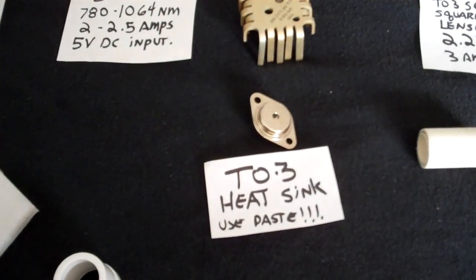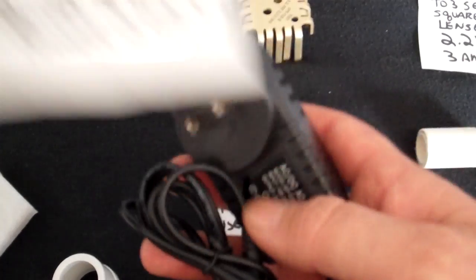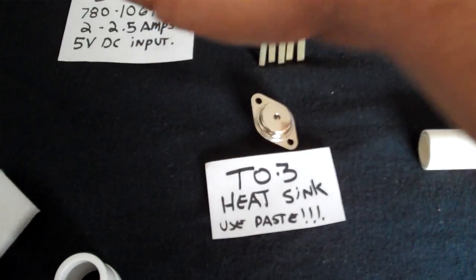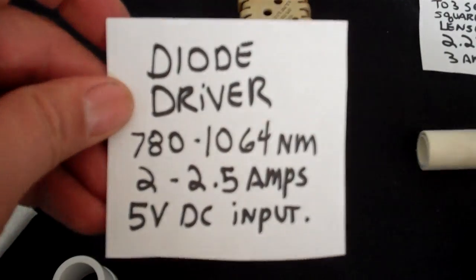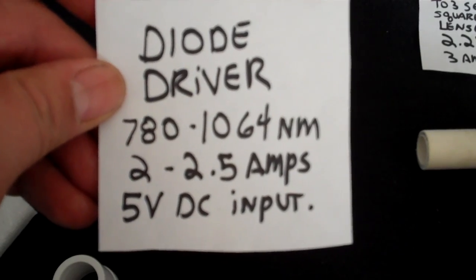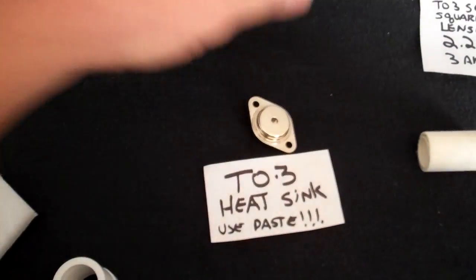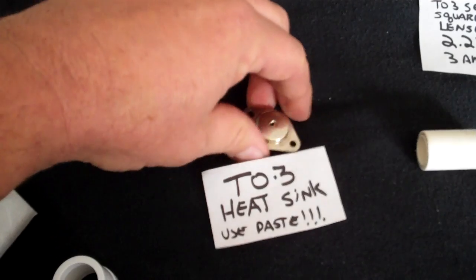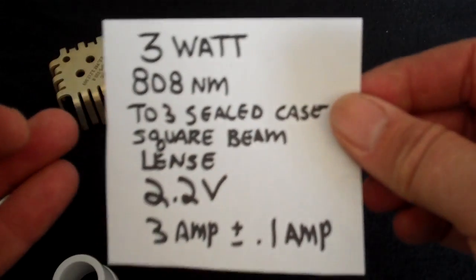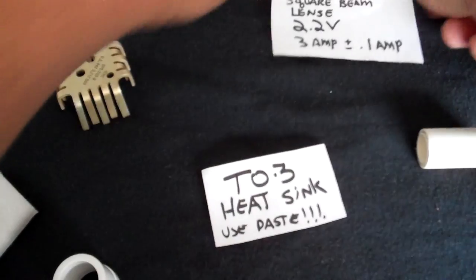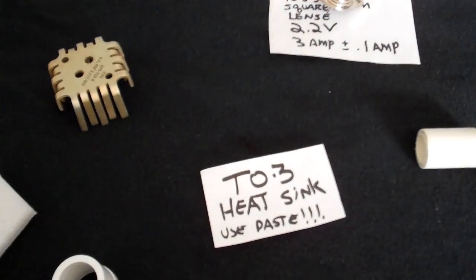So real quick, running out of time. Five volt DC power supply. Diode driver. 780 to 1064, 2 to 2.5 amps and five volts DC. T03 heat sink. T03 laser diode, 808 nanometers. Here's all the specs on that. You can freeze the frame or whatever. All right. And I think that's it. I pretty much covered it.